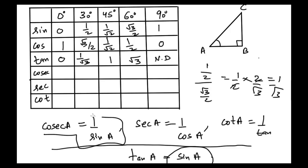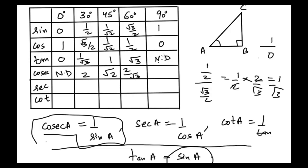For cosecant, which is the reciprocal of sine: cosec 0° is not defined (1/0), cosec 30° = 2, cosec 45° = √2, cosec 60° = 2/√3, and cosec 90° = 1.